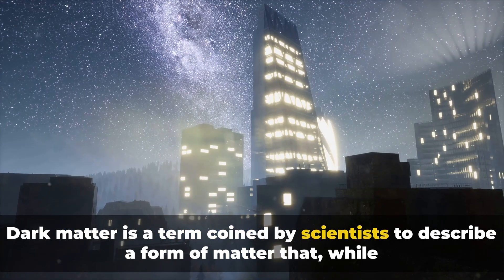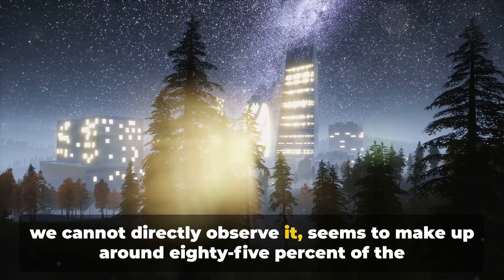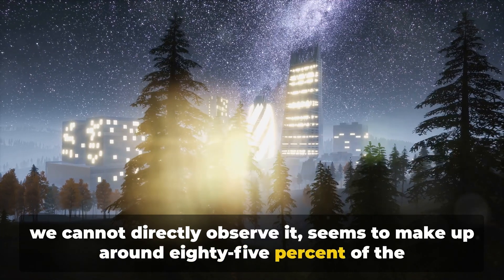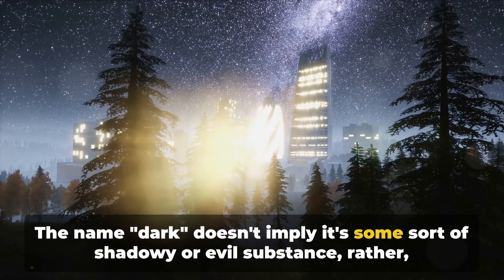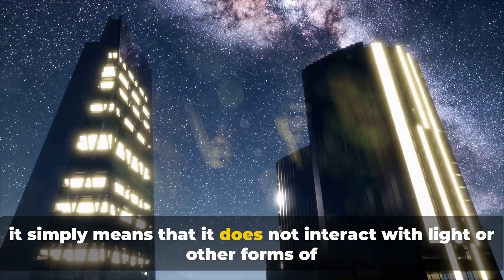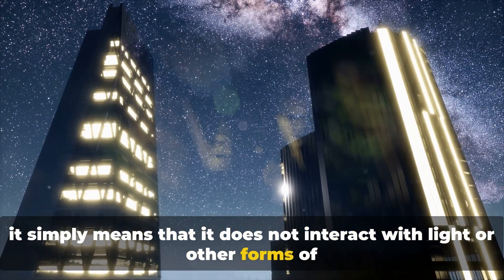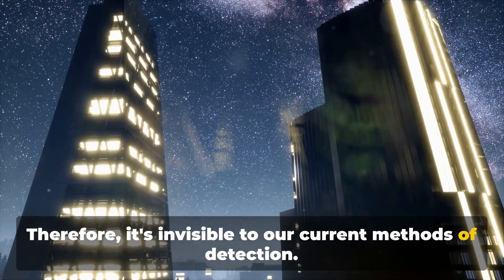Dark matter is a term coined by scientists to describe a form of matter that, while we cannot directly observe it, seems to make up around 85% of the universe's total matter. The name dark doesn't imply it's some sort of shadowy or evil substance. Rather, it simply means that it does not interact with light or other forms of electromagnetic radiation. Therefore, it's invisible to our current methods of detection.